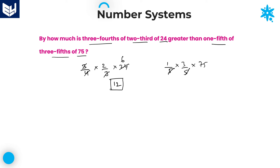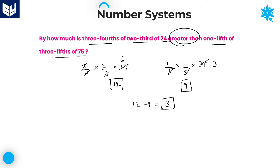For 1/5 of 3/5 of 75: 5 times 5 is 25, and 3 times 25 is 75; then 3 times 3 is 9. The second answer is 9. The question asks by how much 12 is greater than 9: 12 minus 9 equals 3. So 3 is the required answer — the first value is 3 greater than the second.